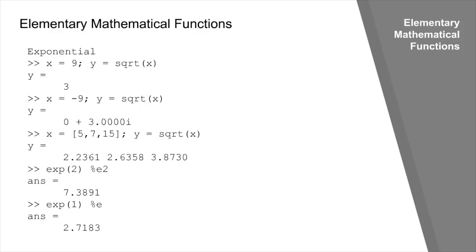Similar to the square root function, we have the exponential function that computes e to the power x. When we type exp(2), we are calculating e to the power 2, where e is the base of the natural logarithms. To see the value of e, we can type exp(1), which returns 2.7183.